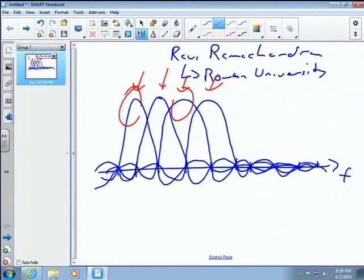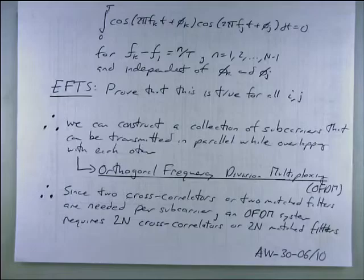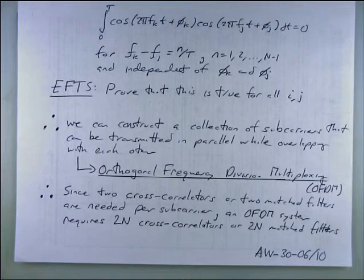Try it out in MATLAB — the separation between adjacent subcarriers is just 1 over T, the symbol period separation. Not 1 over 2T — 1 over T. We're talking really tightly packed signals.